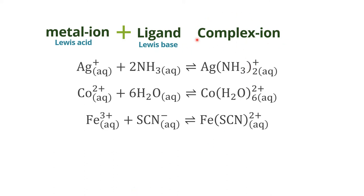The complex ion is the product of interaction between metal ion and ligand. The metal ion is the Lewis acid that accepts an electron pair; the ligand is the Lewis base that donates an electron pair. The metal ion will have a positive charge — a lack of electrons. The ligand can be any molecule with an electron pair. For example, ammonia: if you draw its Lewis structure, you'll see that nitrogen has one lone pair, which is used to form a coordinate covalent bond to silver ion.